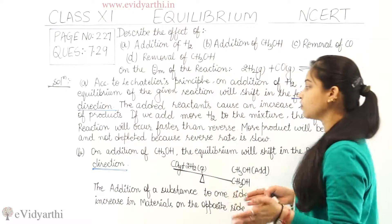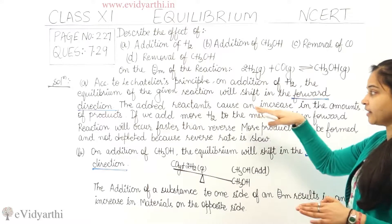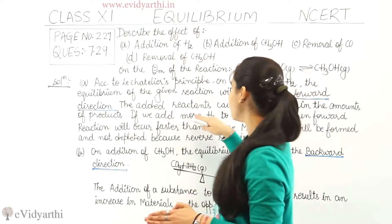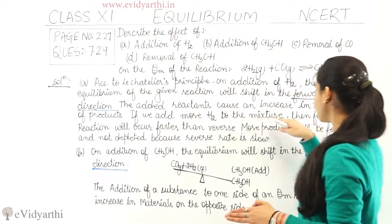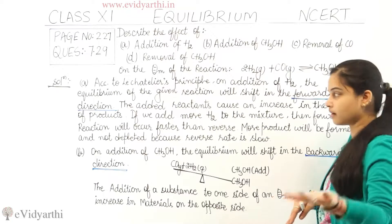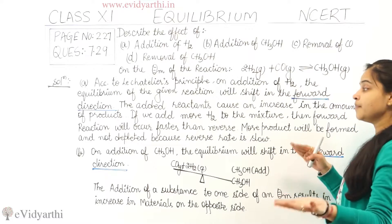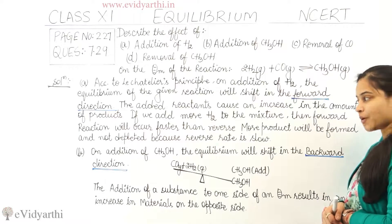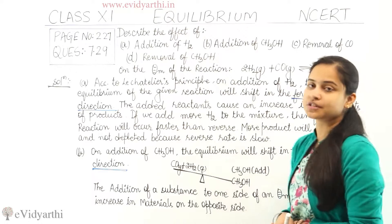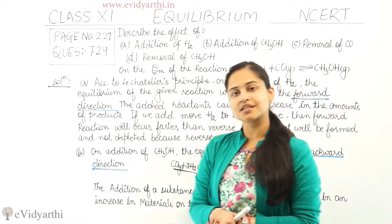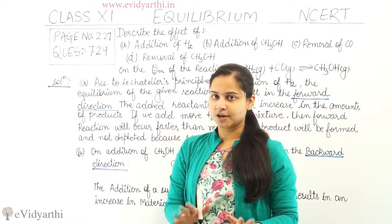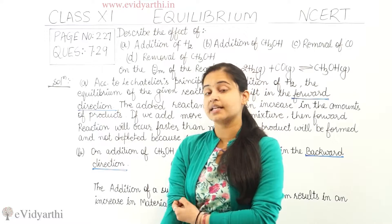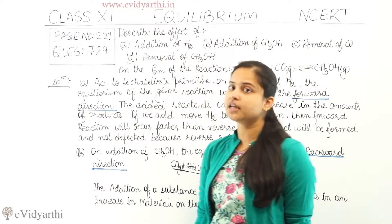So to summarize: the added reactants cause an increase in the amounts of products. If we add more H₂ to the mixture, the forward reaction will occur faster than the reverse, more products will be formed and not depleted because the reverse rate is slow. So the equilibrium will shift in the forward direction if we are adding hydrogen to the reaction.